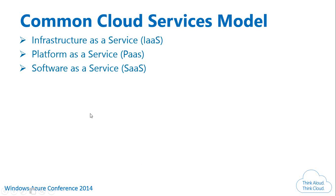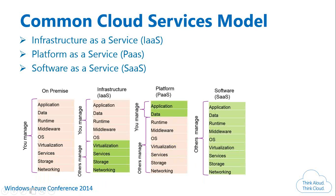When running on premise, you manage everything — application, data, runtime, middleware, virtualization, and networking. With IaaS, also called hardware as a service, everything below the OS — virtualization, storage, networking — is managed by the service provider. You install the OS, runtime, middleware, and manage data and application yourself. You don't have to worry about networking and virtualization.